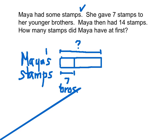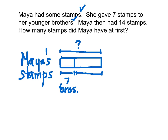Have I taken care of the information in that sentence — she gave seven stamps to her younger brothers? Yes. Check. Maya then had 14 stamps. Stop. If this is the amount that she had, and this is the amount she gave away, well, this is the amount that she then had. So from this point to this point must be the 14 stamps that Maya had. From here to here is 14 — this is what she had left.